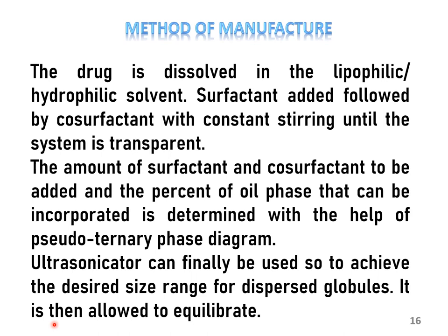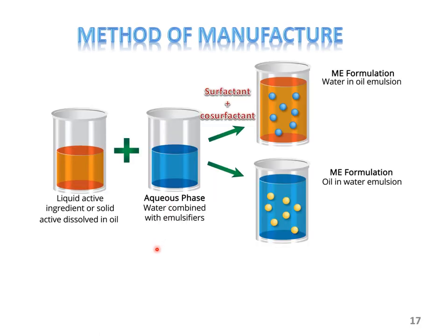Let us now move ahead with the actual method of manufacture. The method is very simple and involves dissolving the drug in the phase that it is soluble in — either the oily phase or the aqueous phase. This is followed by addition of surfactant and co-surfactant and stirring until a transparent monophasic system is obtained. The amount of surfactant and co-surfactant and the ratio to be added, as well as the percentage of the internal phase, is determined with the help of a pseudo-ternary phase diagram. Once mixed and the system is transparent, an ultrasonicator is used to achieve the desired size range for the dispersed globules, and the system is then allowed to equilibrate.